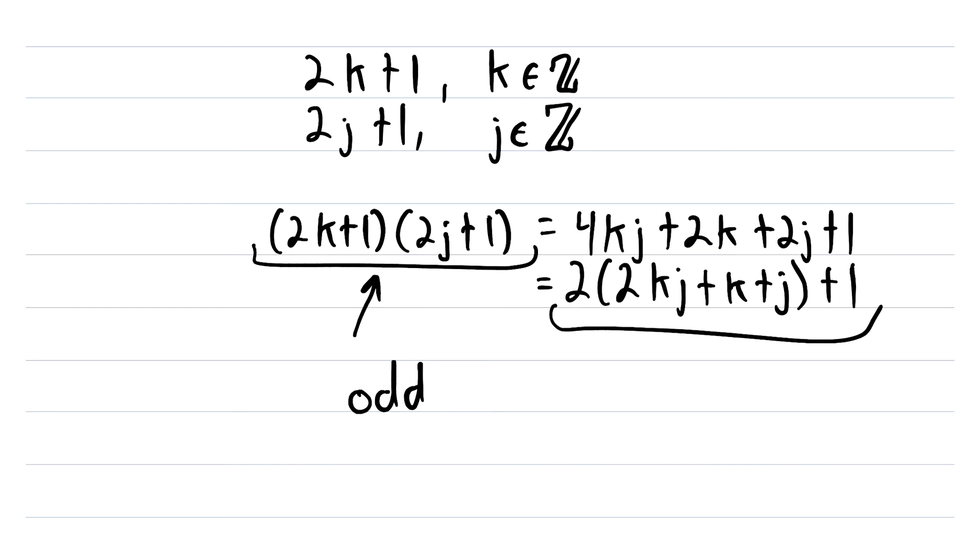And like I always say in these videos, I don't write the proof for you, I just show you the math behind the proof. So let's quickly go over what we did one more time. Remember, the claim is about the product of two arbitrary odd numbers. So we begin with two arbitrary odd numbers. And then of course, we multiply them.